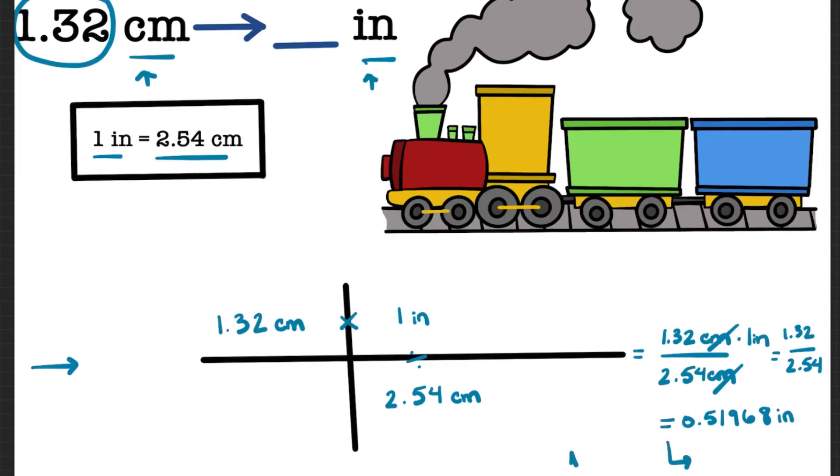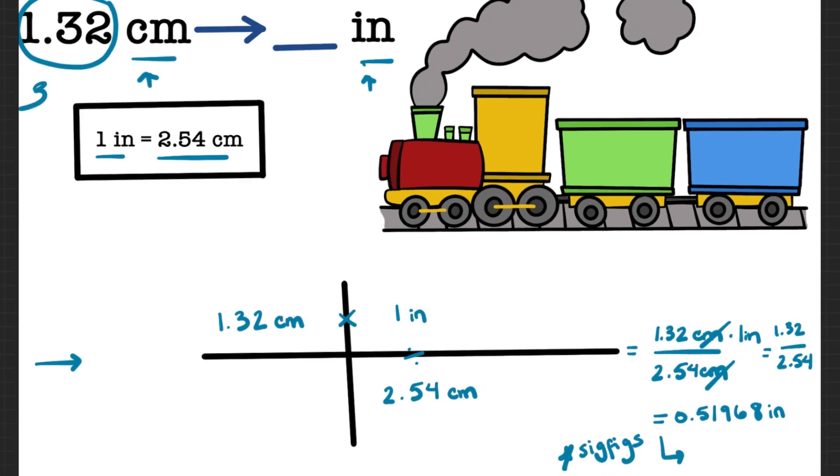The final step involves sig figs. We need to make sure that our final answer has the same number of sig figs as the first given quantity. Since 1.32 had three sig figs, that means that we are going to round our final answer to three sig figs. So we will arrive at a final answer of 0.520 inches.